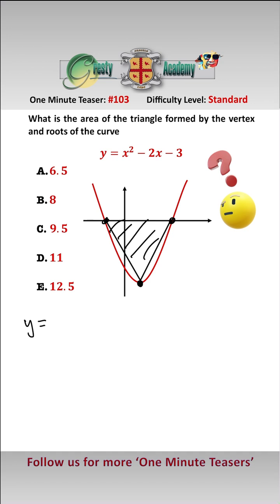To do that we complete the square, so that gives us y equals x minus 1 squared minus 4, i.e. y plus 4 equals x minus 1 squared. Therefore the vertex is at the point 1, minus 4.